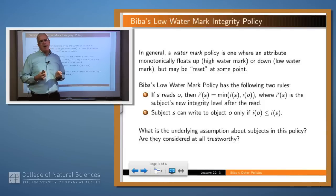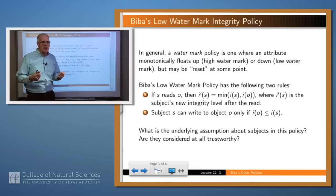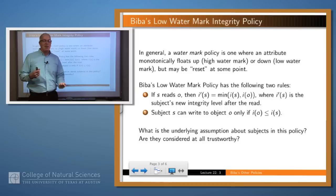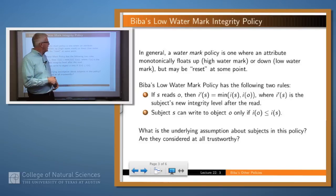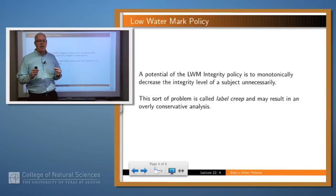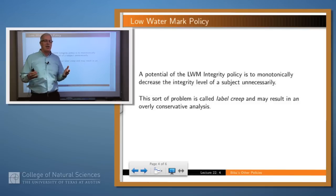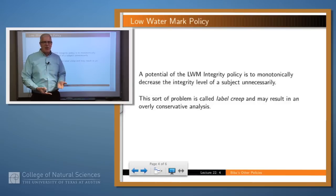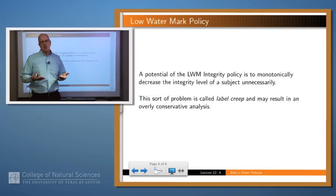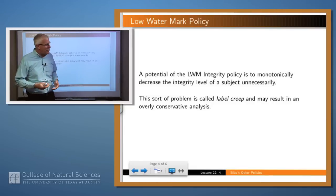Biba is not giving much credit to the subject. He's saying, if you accidentally read some lousy information, then you may be corrupted by that, and your state floats down to that level. A tendency in a system like this, if lots of subjects are reading lots of different objects and not doing it very carefully, is that the levels of all the subjects tend to propagate downward — what you have is called label creep, which gives a pretty conservative estimate of the overall integrity of the system.